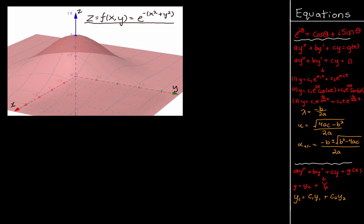If you understand that, we can move on and talk about partial derivatives. We need to look at an actual surface in R3, so we have a function defined as z equals f of x y, which equals e to the negative of the quantity x squared plus y squared. This is a multivariable function where z is dependent on two input variables x and y. I actually plotted this surface using a website called GeoGebra. I'm going to analyze a specific point: x equals 1, y equals 1, giving z equals e to the negative 2, so the ordered triple is (1, 1, e^(-2)).